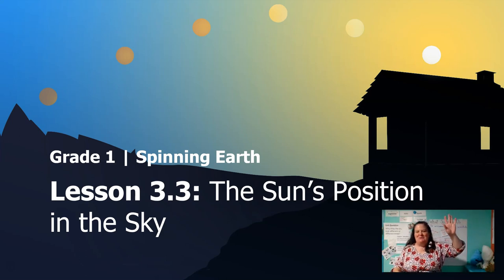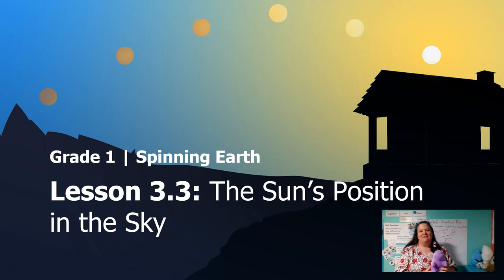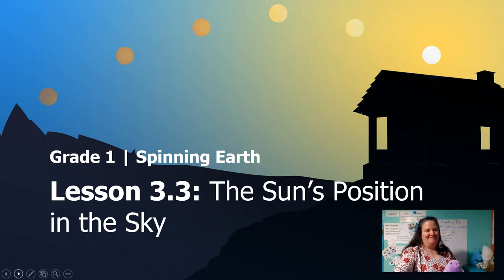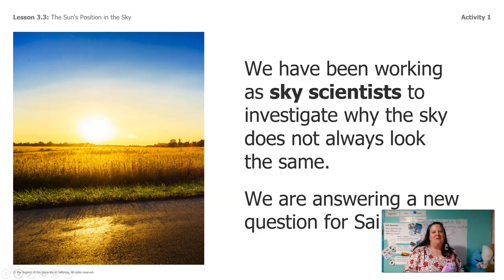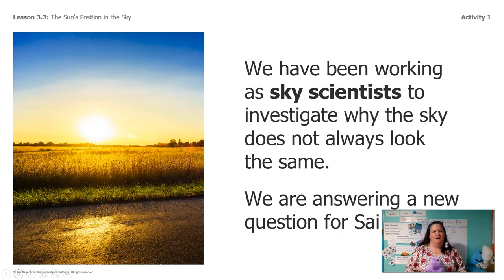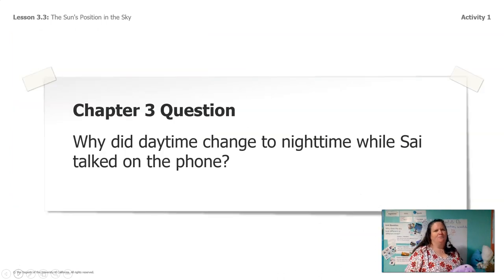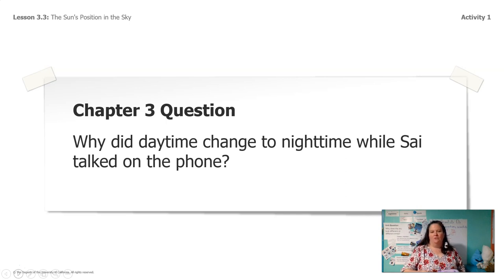Hi everybody, it's me Miss Ward and my friend Lavender, and we're here today to do lesson 3.3, the sun's position in the sky. Let's go ahead and get started. So we've been working as sky scientists to investigate why the sky does not always look the same. And now we're answering a new question we got from our friend Sai. He asked us, why did daytime change to nighttime while Sai talked on the phone?